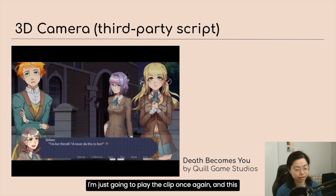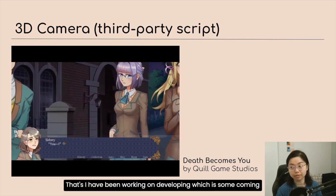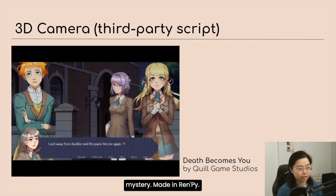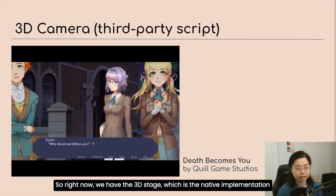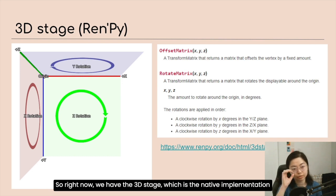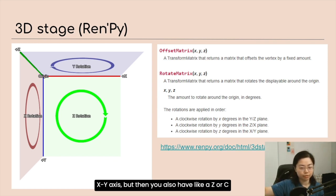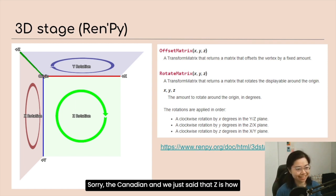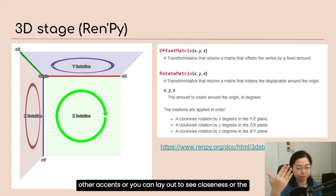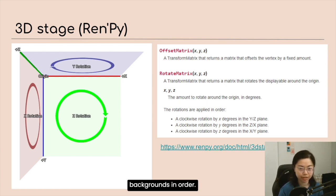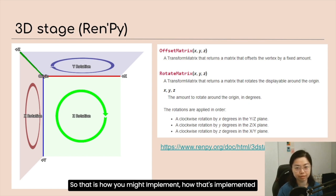I'm going to play the clip once more. This is a game I've been developing called Death Becomes You — it's a murder mystery made in RenPy, coming out soon on Steam. Right now we have the 3D stage, which is the native implementation in RenPy. It has X and Y axes, but you also have a Z-axis — sorry, the Canadian in me just said that — basically an additional axis where you can lay out the closeness or position of all the images, characters, and backgrounds in order.